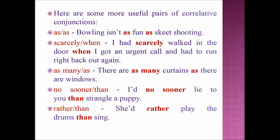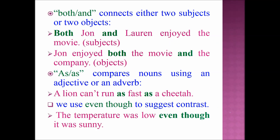BOTH/AND connects either two subjects or two objects. Example sentence with two subjects: 'Both John and Lauren enjoyed the movie.' Example sentence with two objects: 'John enjoyed both the movie and the company.'